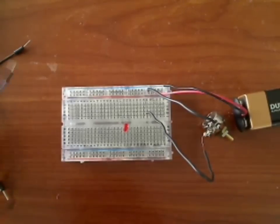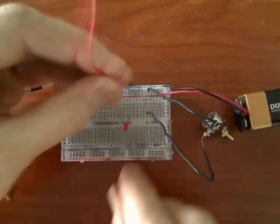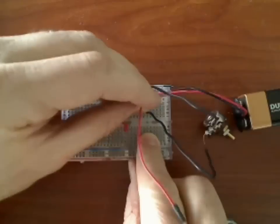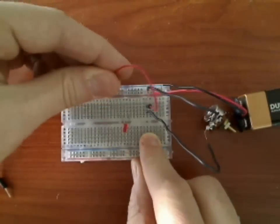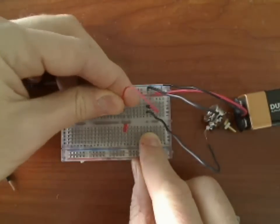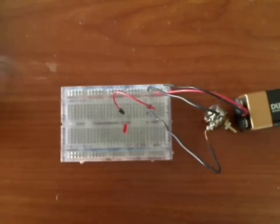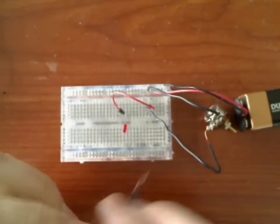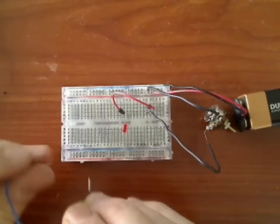Now to get the power to the LED, I'm going to have to go from that same column over to the column that the LED is in. And I'm going to have to connect it to ground.